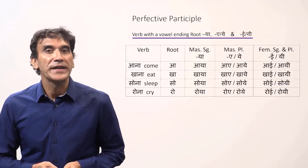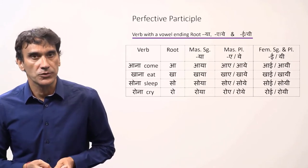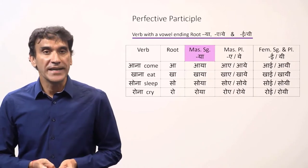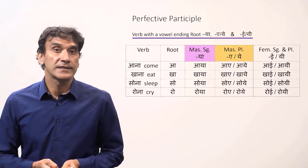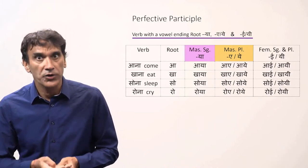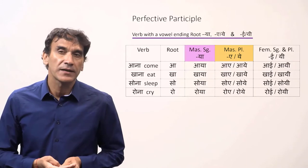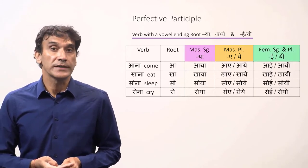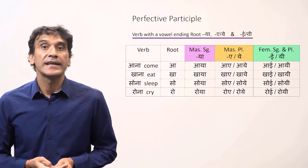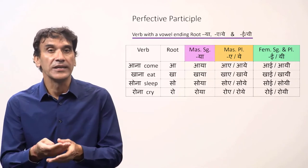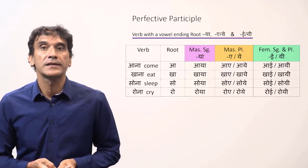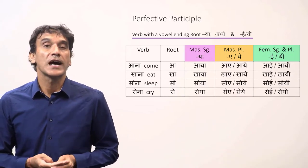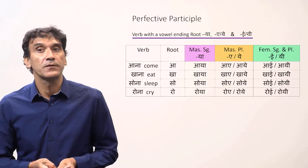For the verbs with the vowel ending root, you need to add the following endings to the root — they are a little different from the consonant ending roots. For masculine singular, you add -ya. For masculine plural, there are alternate endings: you can either add -e or -ye; they both sound quite similar but the spellings are a little different. For feminine singular and plural too, there are alternate endings: you can either add -i or -yi. Here is the table showing how to make the perfective participles for verbs with vowel ending roots.